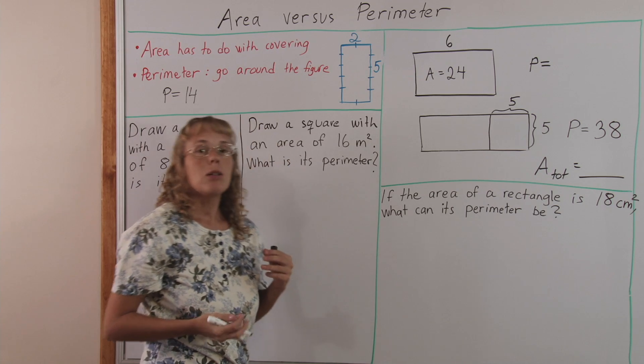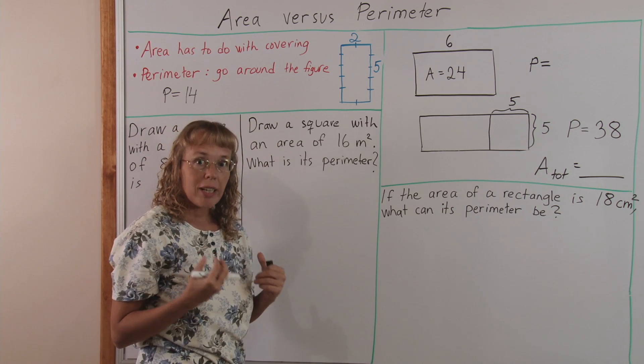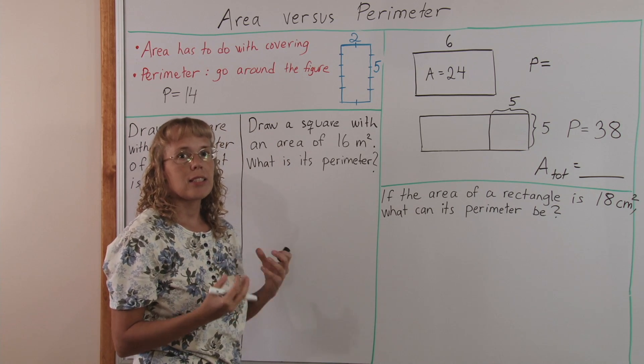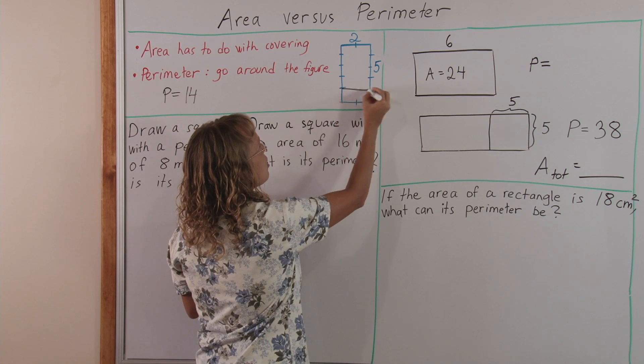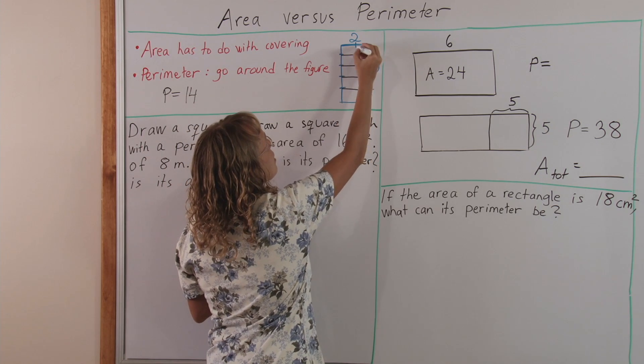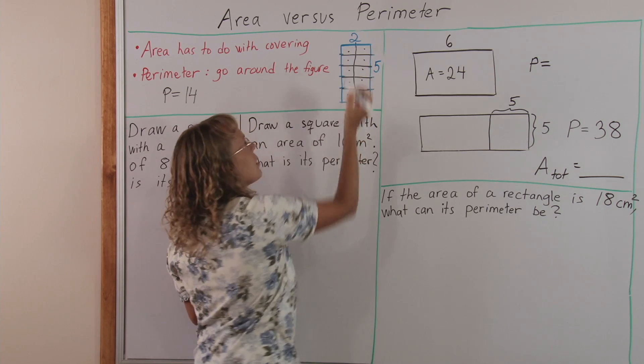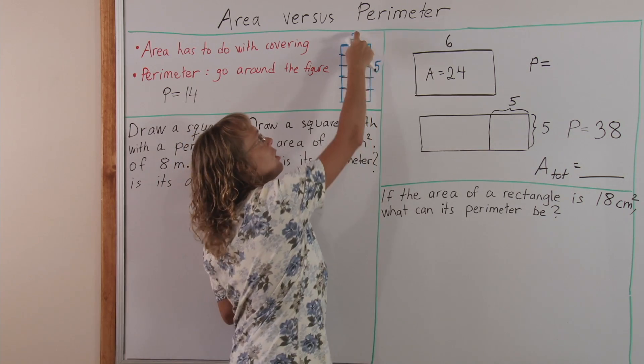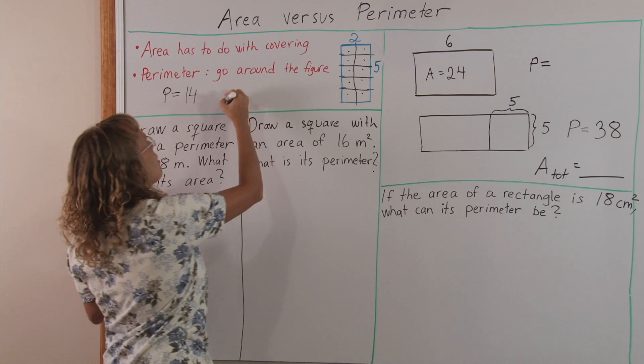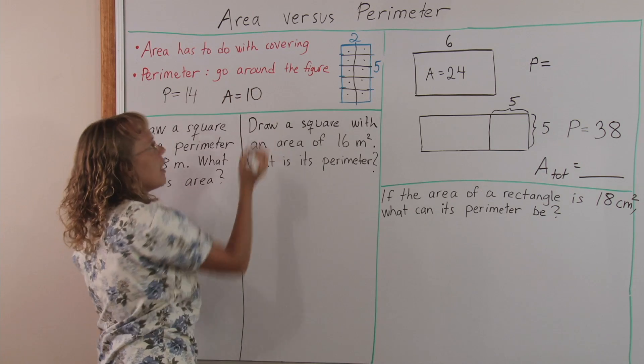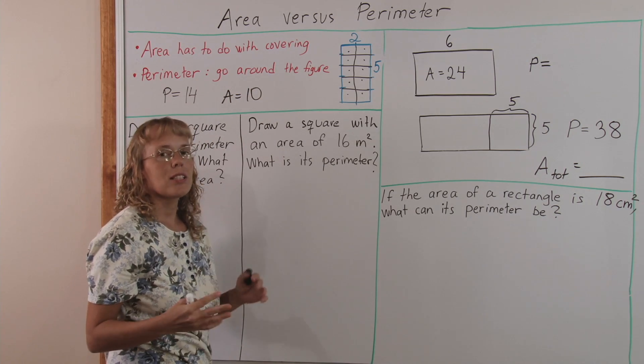Now the area was calculated in squares, how many squares are inside the figure. I could draw these lines to make a grid here, then you could count your squares, or you can use multiplication, two times five is ten. Area is ten square units, or ten squares.